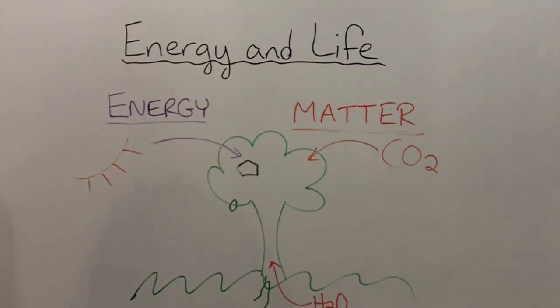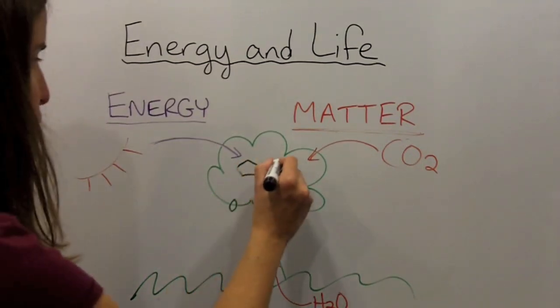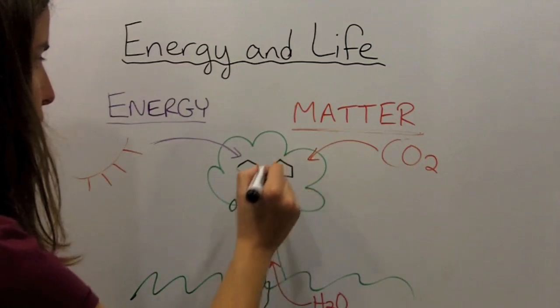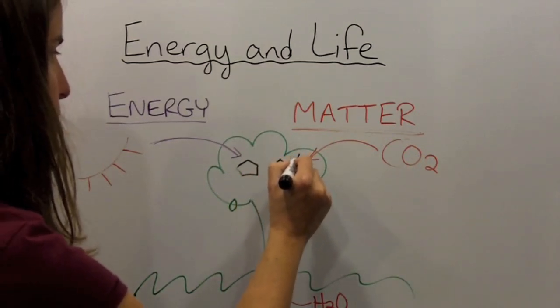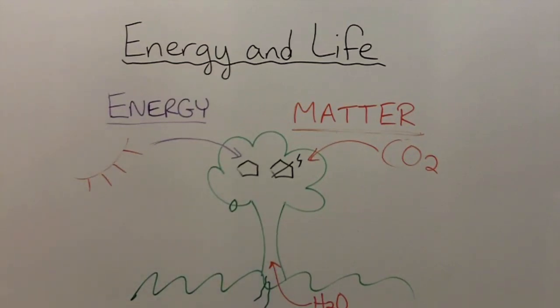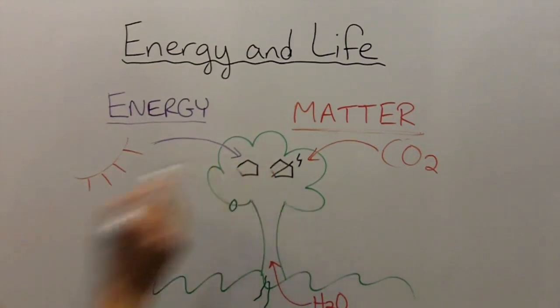The second thing that plants can do with glucose is to break the molecules apart in order to get the chemical energy that is stored in the chemical bonds. This process is called respiration. Respiration is the way that most organisms release the energy stored in biological molecules so that they can use it to stay alive.